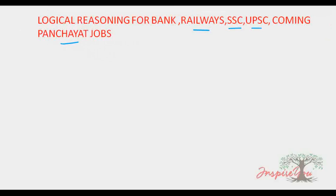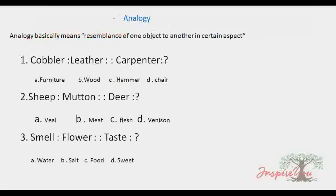The first type is Analogy. Analogy basically means resemblance of one object to another in certain aspects.